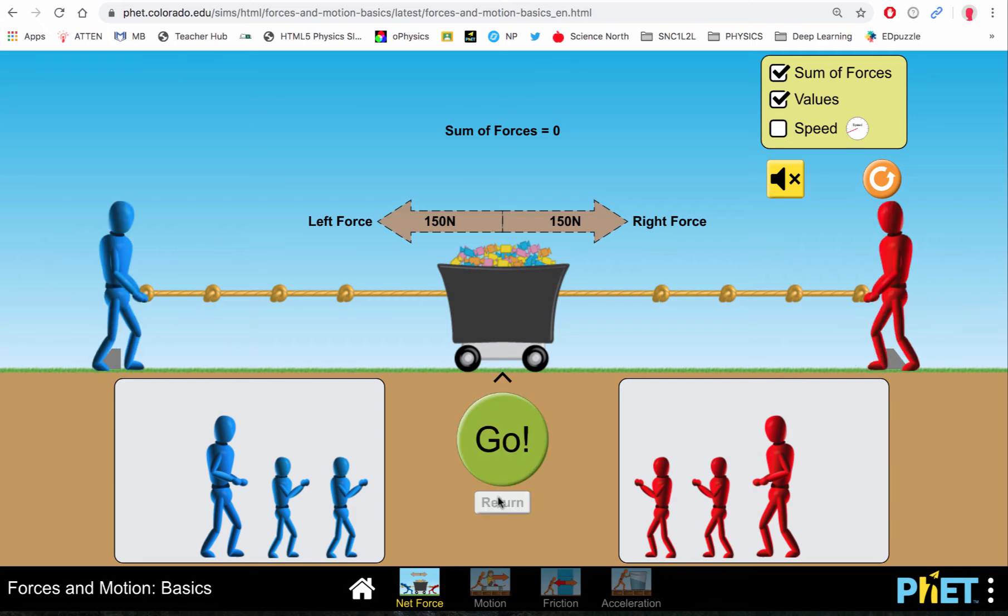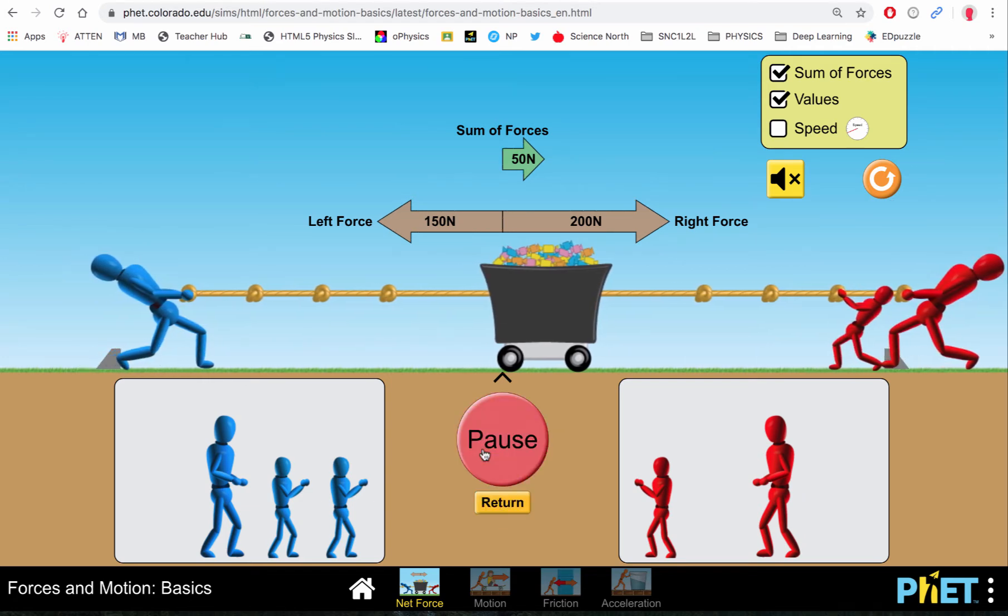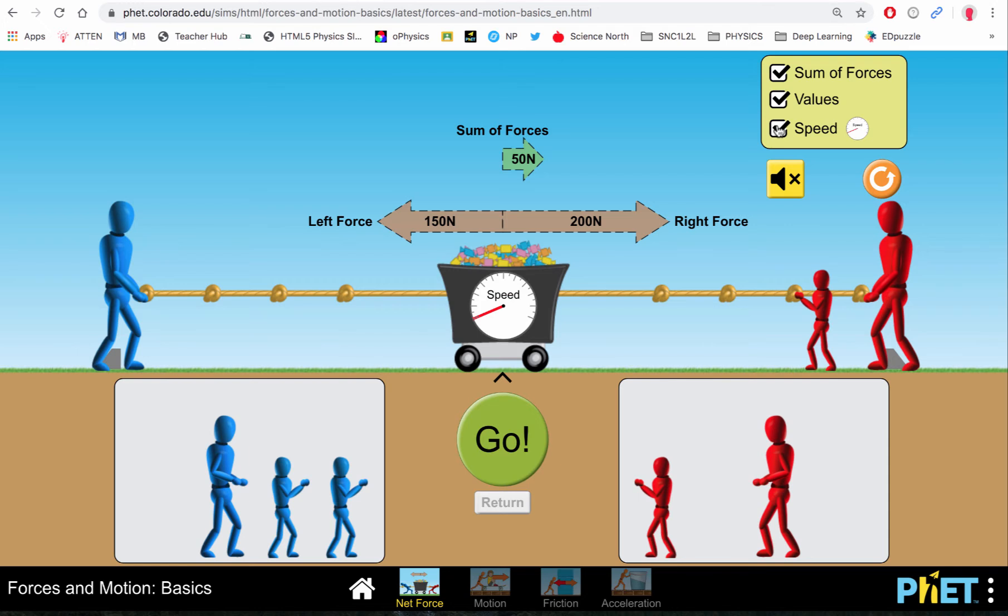We can add an extra person on the right hand side, so now it tells us there's a total pull of 200 Newtons towards the right with only 150 towards the left, giving us a sum of forces of 50 Newtons towards the right. Now we can add a speed to this. Unfortunately, it doesn't actually give us an acceleration; it can show us a qualitative increase in speed.